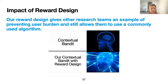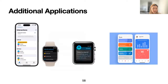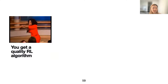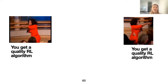Our reward design gives other research teams an example of how to prevent user burden while maintaining their commonly used, well-studied RL algorithm. By designing a surrogate reward that includes a cost term instead of using the true target as the reward, we generalize our contextual bandit framework to capture the key challenge of negative delayed effects of actions. Using both our algorithm design framework and reward design, you too can implement an RL algorithm for your mobile health application — whether for mental health apps, anti-sedentary reminders, or medication reminders.